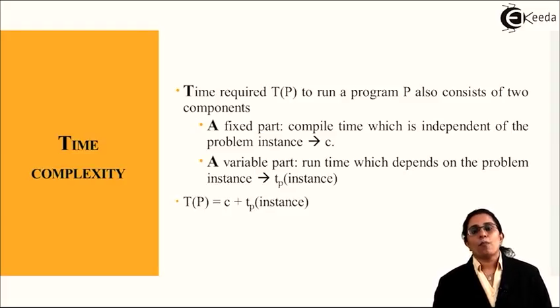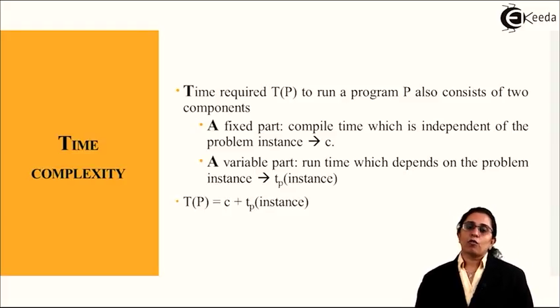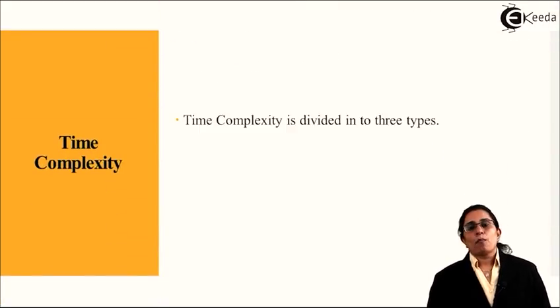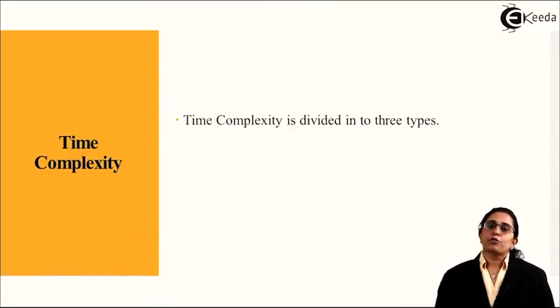So the time complexity T(P) is equal to the constant part, the fixed variable, plus the variable part. Now time complexity is also divided into three types.